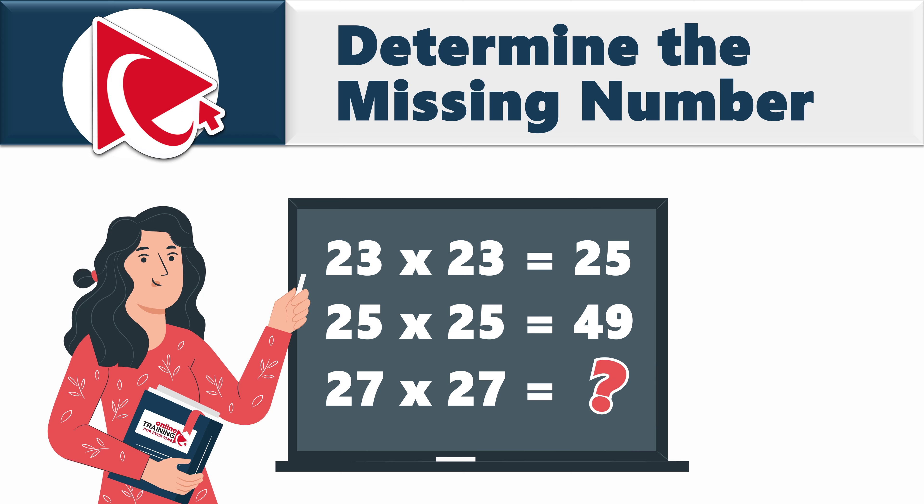And the result of it, you need to select out of four possible choices. Choice A: 64. Choice B: 72. Choice C: 76. And last but not least, choice D: 81.